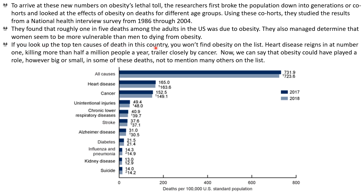If you look up the top 10 causes of death in this country, you won't find obesity on the list. Heart disease reigns at number one, killing more than half a million people per year, trailed closely by cancer. We can say that obesity could have played a role, however big or small, in some of these deaths, not to mention many others on the list. So this is a chart of all causes of death — how many people died in 2017 and 2018. We have heart disease, cancer, unintentional injuries, chronic lower respiratory disease, stroke, Alzheimer's disease, diabetes, influenza and pneumonia, kidney disease, and suicide. I was actually surprised suicide was that high on the list comparatively.